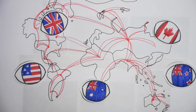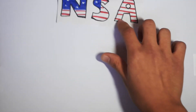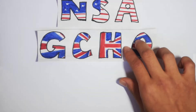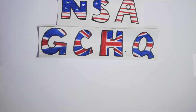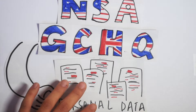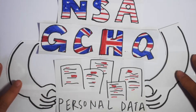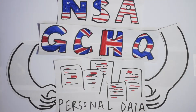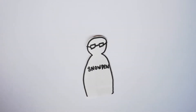On 5th June 2013, a British newspaper, The Guardian, published the first in a series of revelations about mass surveillance operations conducted by the United States National Security Agency, also known as the NSA, and the UK's Government Communications Headquarters, also known as the GCHQ. These organizations are responsible for the global monitoring, collection, and processing of information and data for the purpose of intelligence operations.